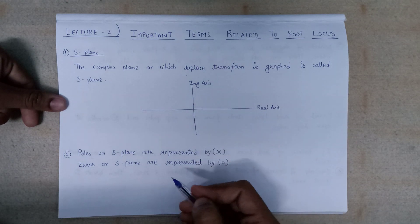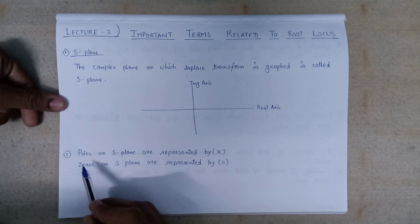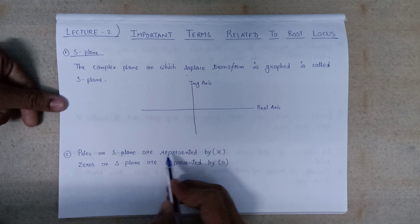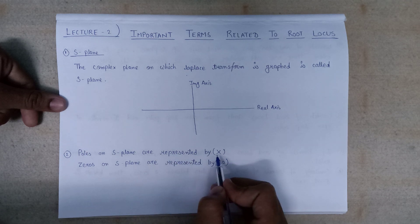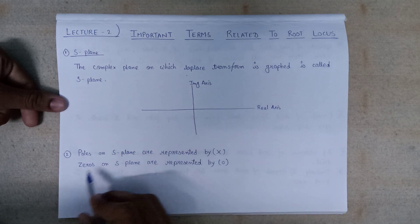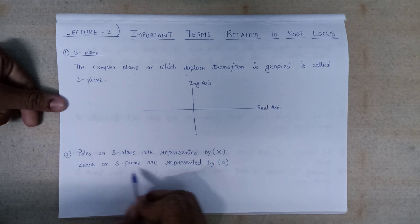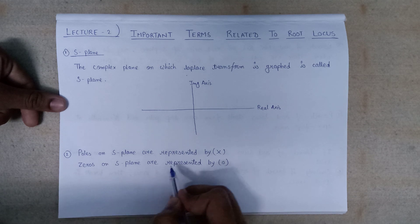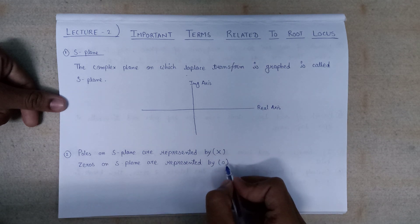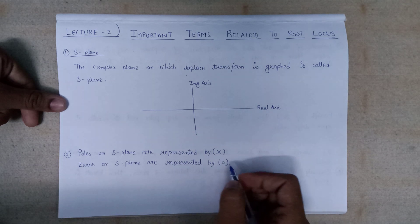Poles on the S-plane are always represented by the symbol cross (×), and zeros on the S-plane are represented by the symbol 0 (circle).